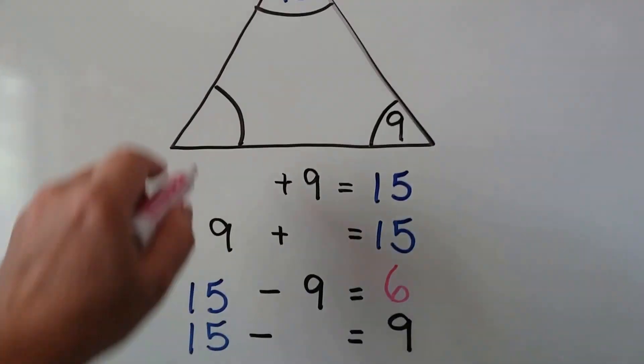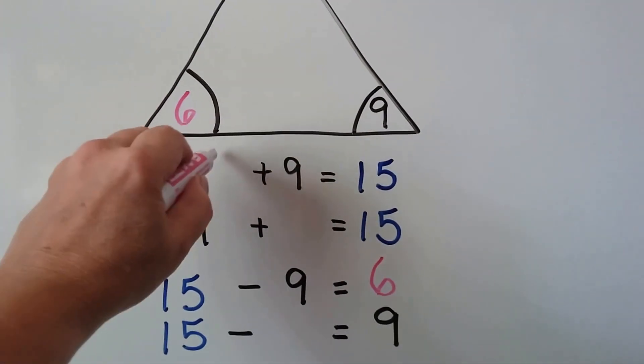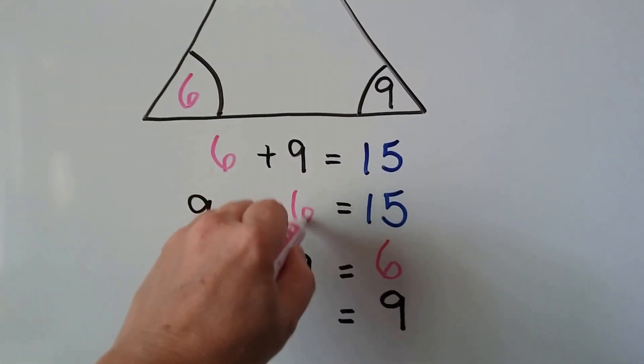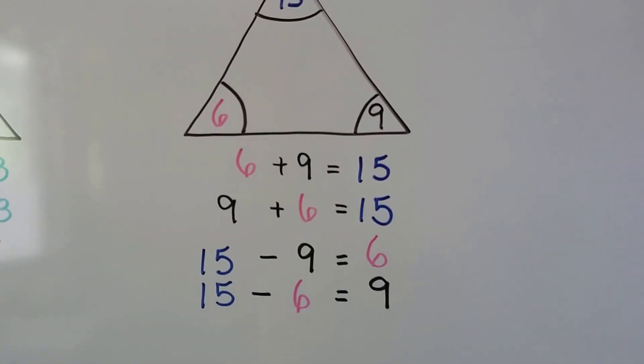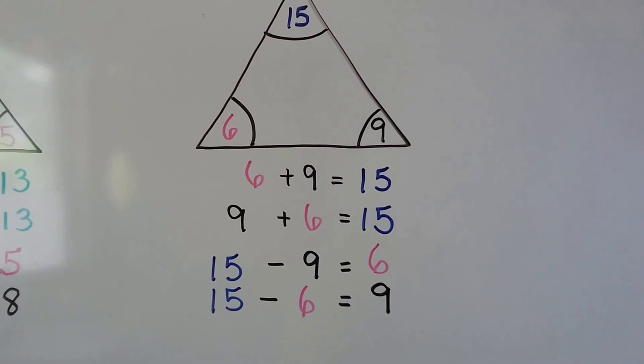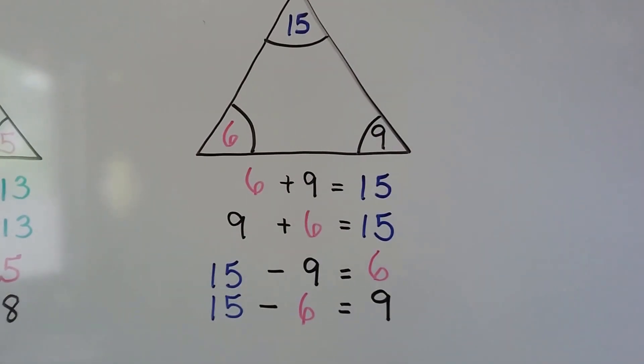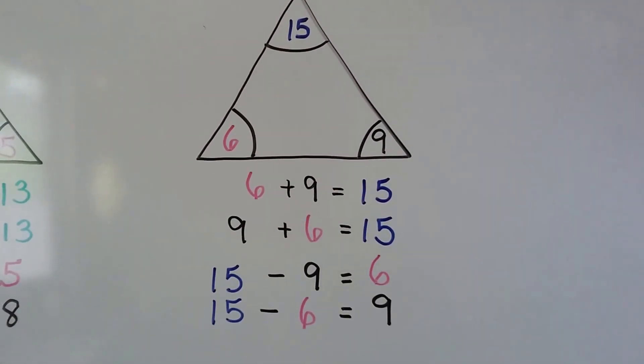For this triangle, it's a six. We can fill in all the other numbers. We know the missing one is a six. Six plus nine equals fifteen. Nine plus six equals fifteen. Fifteen minus nine equals six, and fifteen minus six equals nine.